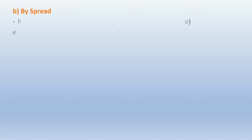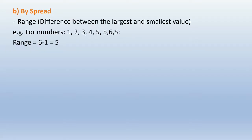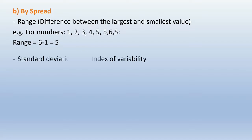We can also summarize by spread, to know how our data is spread. One of the measures of spread is the range, which is the difference between the largest and the smallest value. The range for our data is 6 minus 1, so the range is 5.